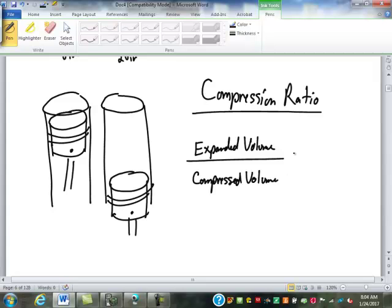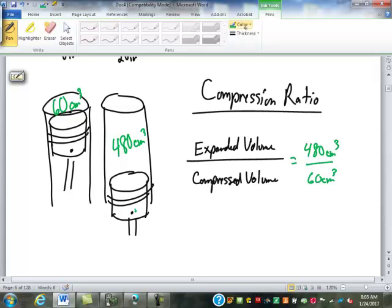Compression ratio is expanded volume over compressed volume. Your expanded volume is at bottom dead center. So, when it is at its largest volume above the top of the piston. Let's say that that is 480 cubic centimeters. Your compressed volume is at top dead center. When the piston is at the highest part of the stroke. It has the lowest volume up here. Let's say that is 60 cubic centimeters. This is literally 480 or 60. The cubic centimeters will cancel out. Both of those divide by 60, giving me an eight to one compression ratio.